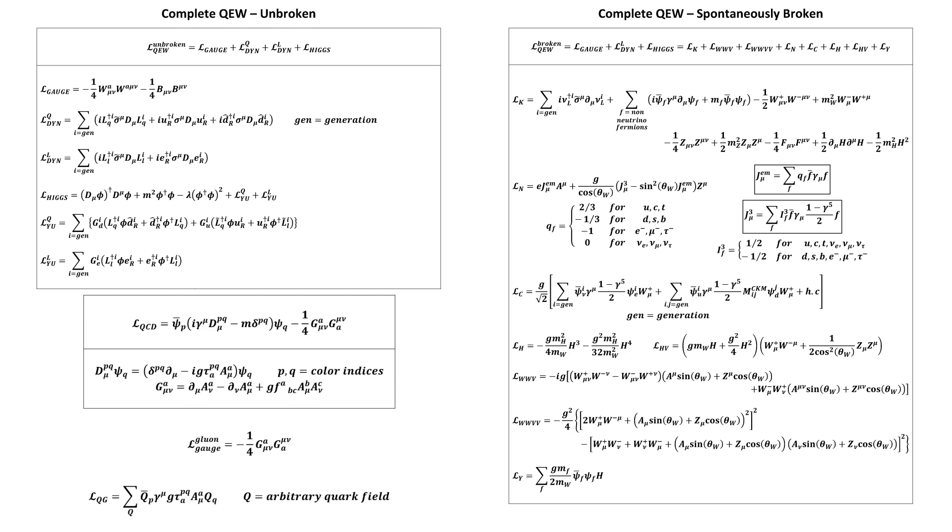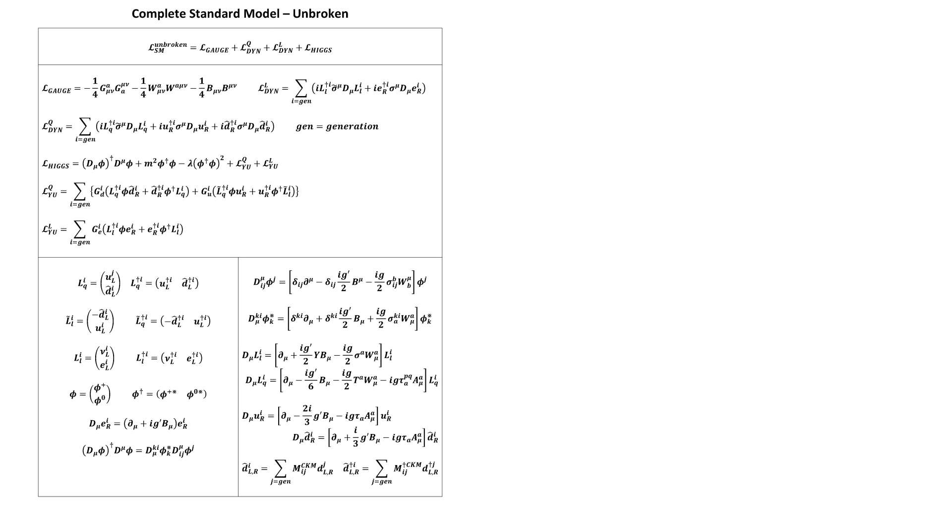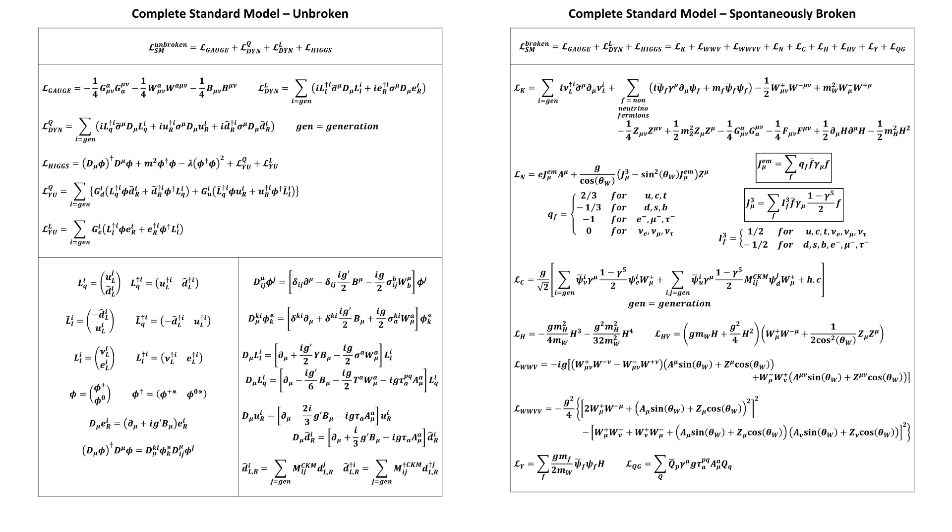inserting these terms gives us this unbroken complete standard model Lagrangian density, where I've inserted the coupling to the gluons into the quark covariant derivatives with suppressed color indices, and it also gives us this spontaneously broken complete standard model Lagrangian density.